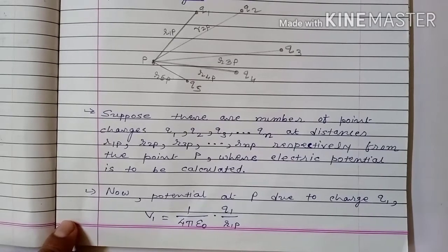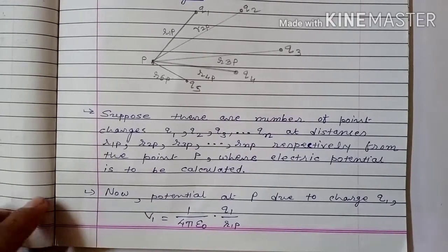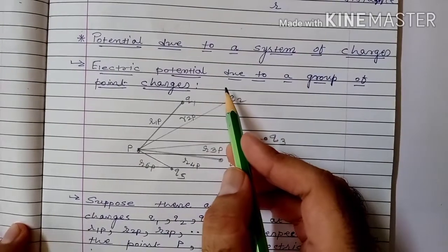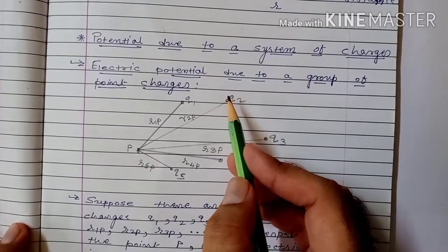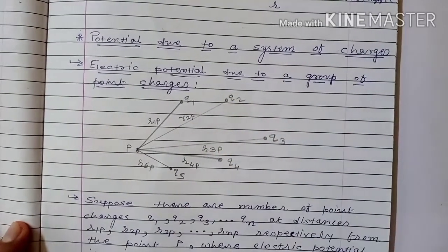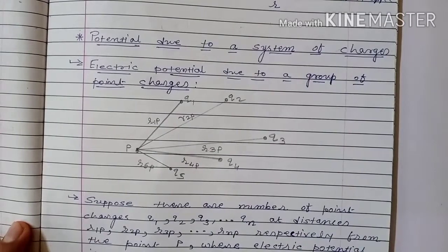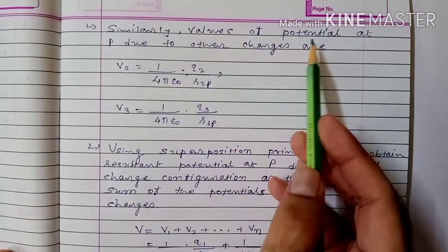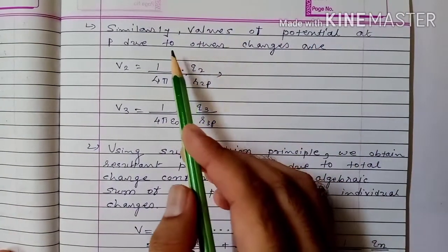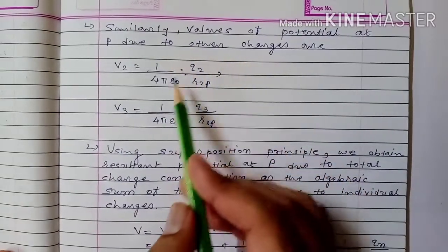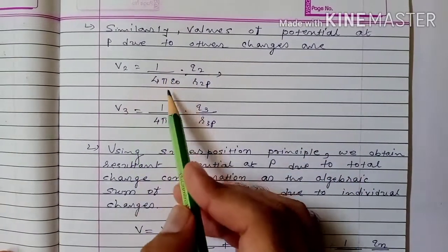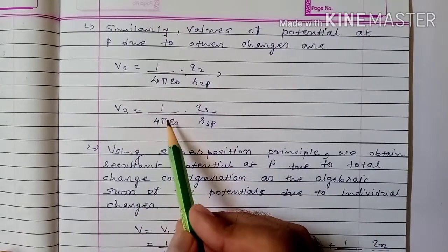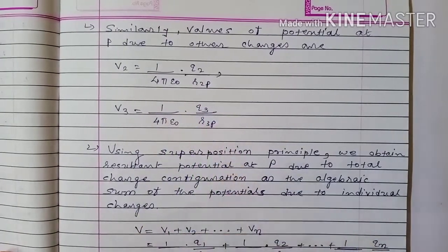R1P is the distance between charge Q1 and point P. Similarly, electrostatic potential due to the second charge is 1 upon 4π ε₀ into Q2 upon R2P. Likewise, V2 equals 1 upon 4π ε₀ into Q2 upon R2P, and V3 equals 1 upon 4π ε₀ into Q3 upon R3P.